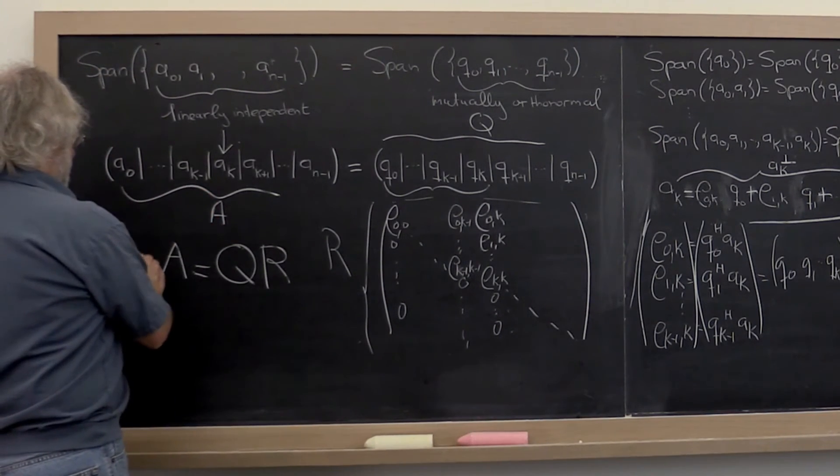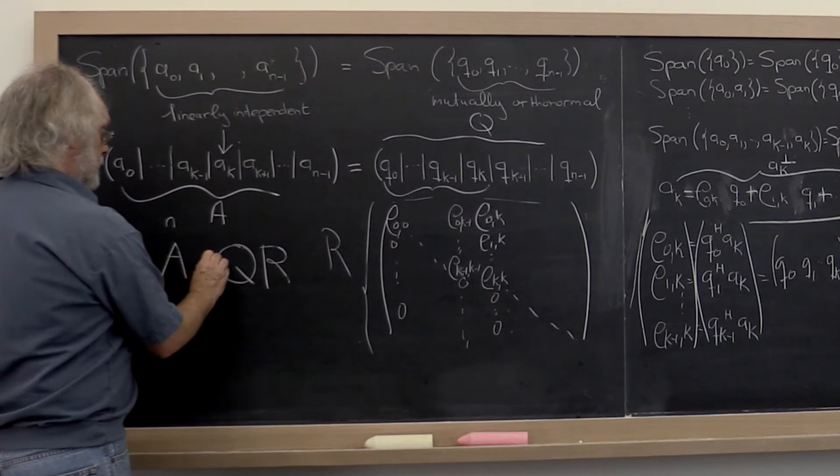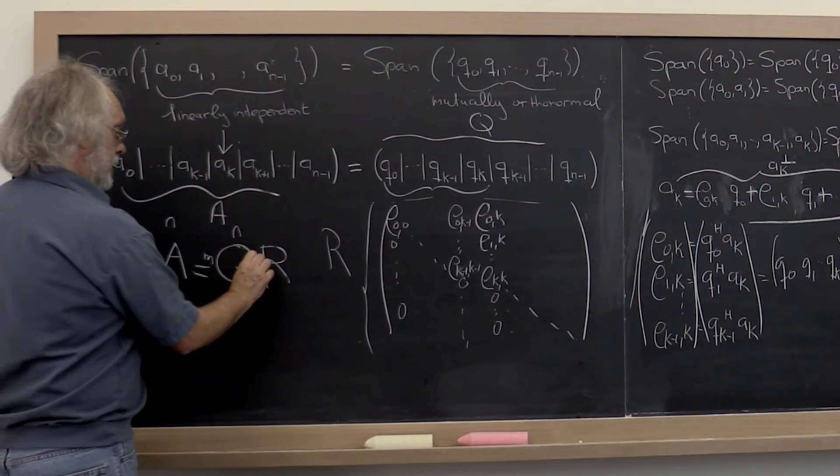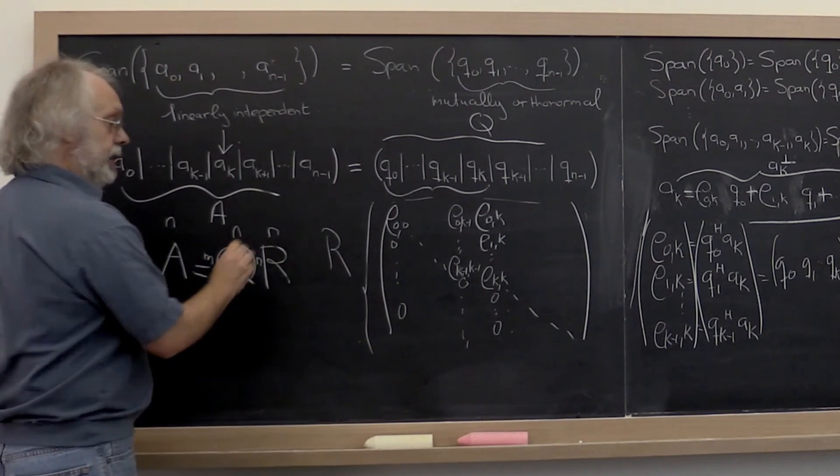This matrix is M by N, this matrix is M by N, and matrix R is N by N.